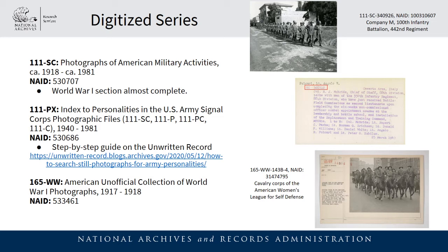Another series we have completely digitized is 165-WW — our series of American unofficial World War I photographs. The series is arranged by file unit, so you'll want to use the file unit search methods I mentioned. You can find a variety of photographs such as military parades, equipment and activities, but also cultural photographs such as libraries, universities, and the American Red Cross.